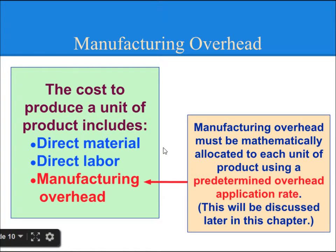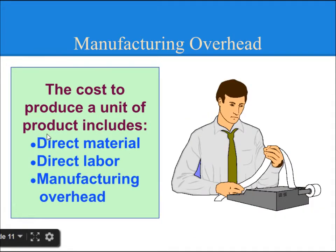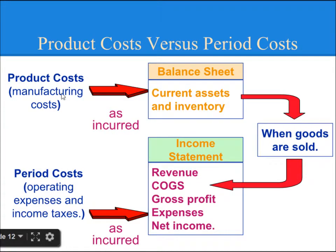The cost to produce a unit of product includes Direct Material, Direct Labour, and Manufacturing Overhead. Manufacturing Overhead must be mathematically allocated to each unit of product using a Predetermined Overhead Application Rate.